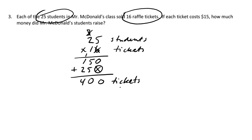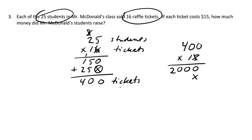Now multiply 400 tickets times $15. There are lots of zeros: 0 times 5, 0 times 5, and 4 times 5 is 20. Then multiply 400 times 1 — that's just 400. Adding those together gives $6,000 raised.